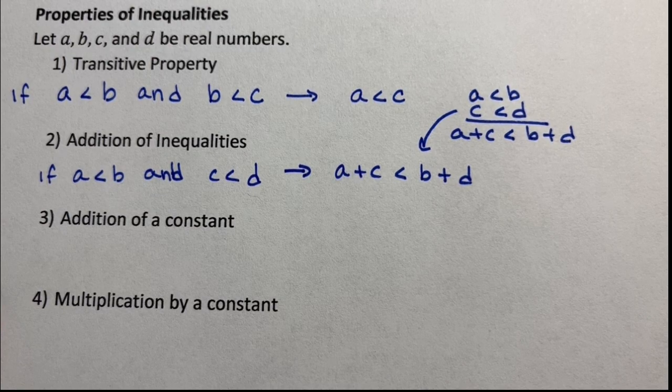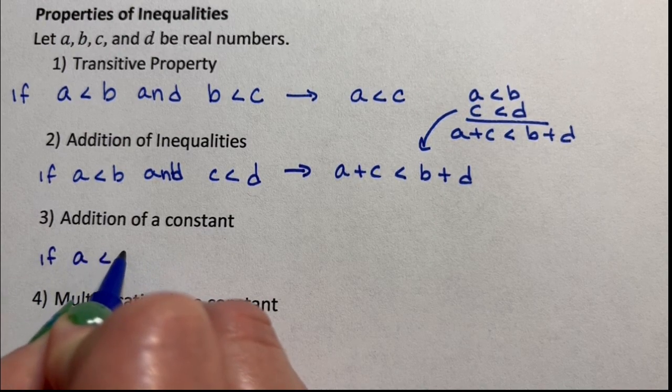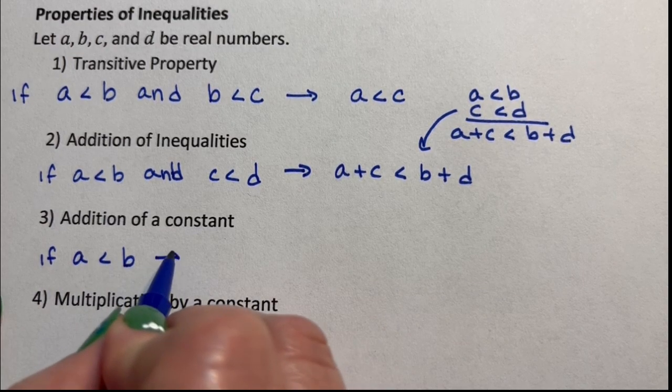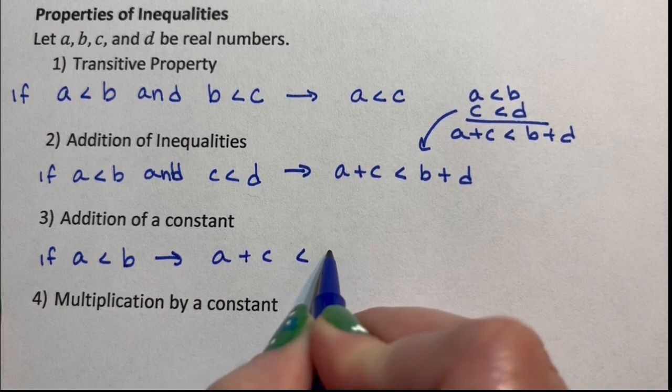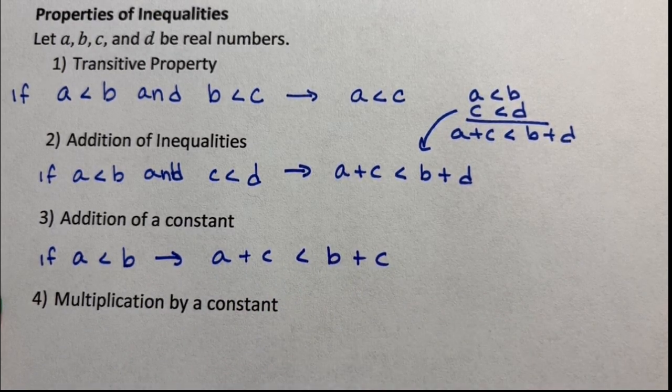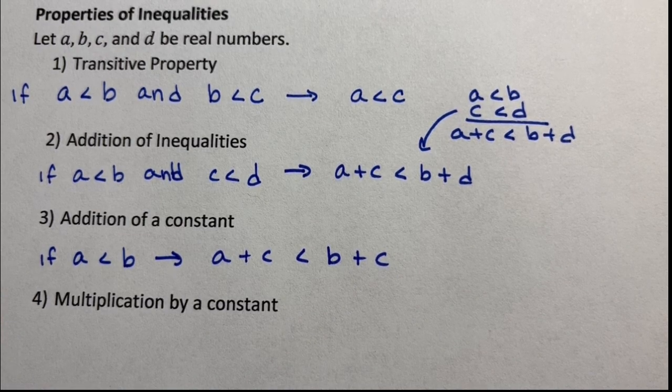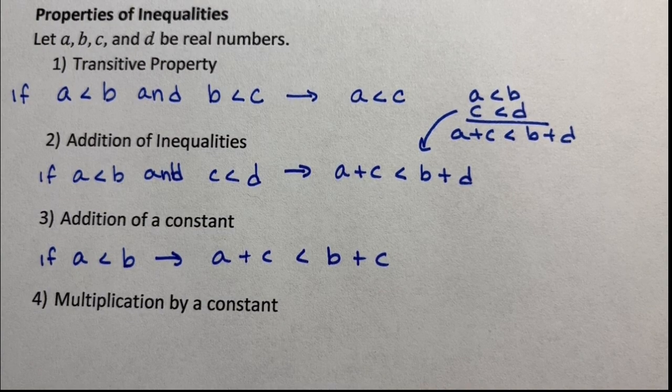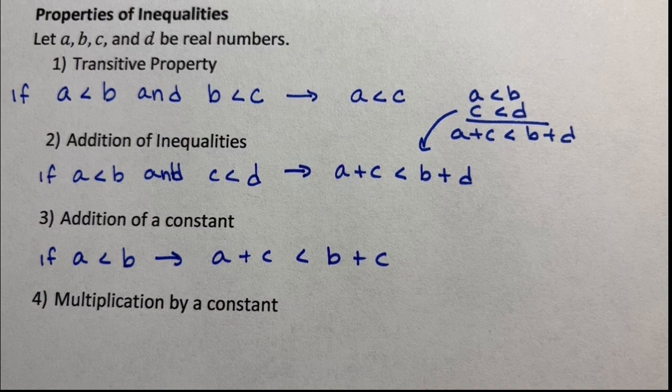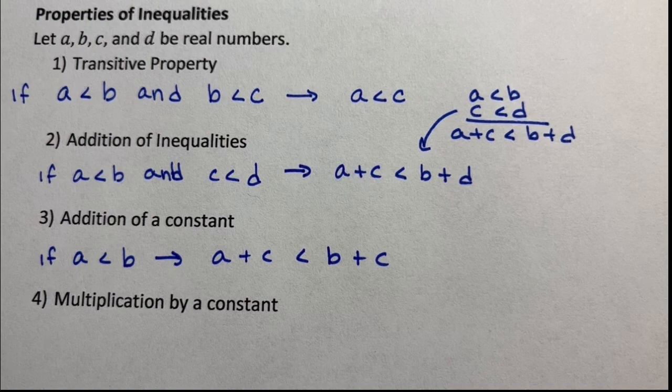Next, addition of a constant. If A is less than B, then A plus C is less than B plus C. This is something we use all the time. If you think about any equation you've ever dealt with, this is just saying like if 0 is less than 10, you can add 5 to both sides, and 5 is less than 15. You can add a constant to both sides, and it's still an inequality.